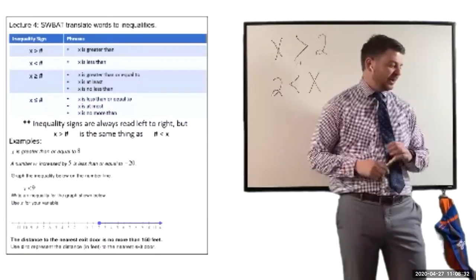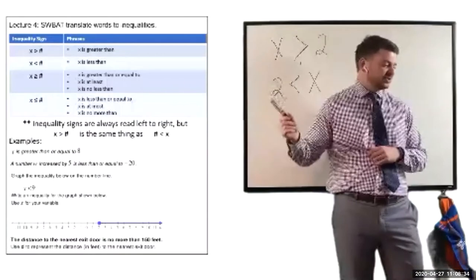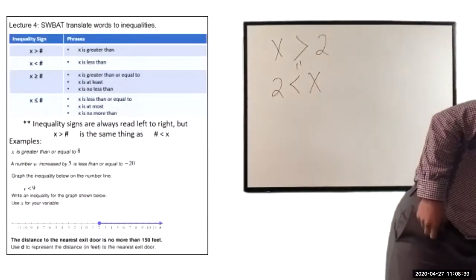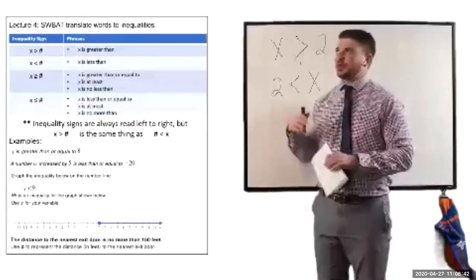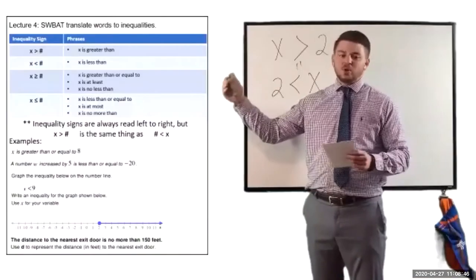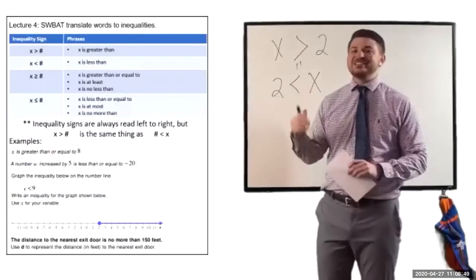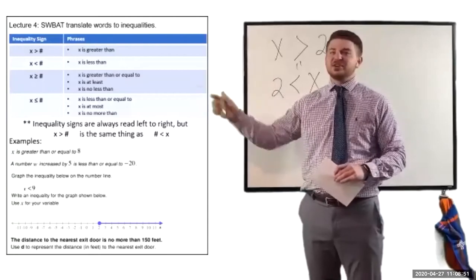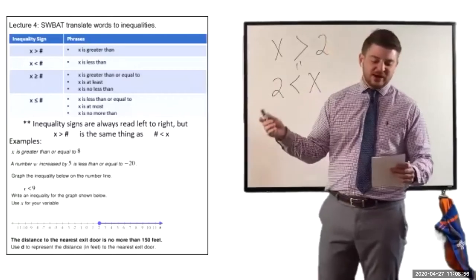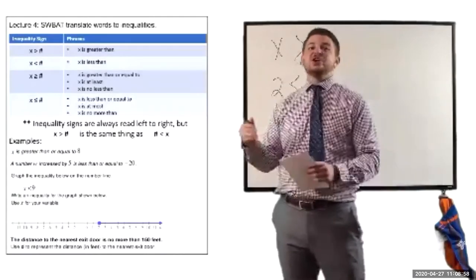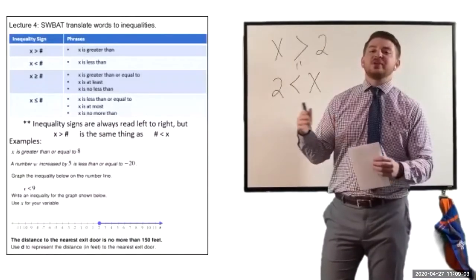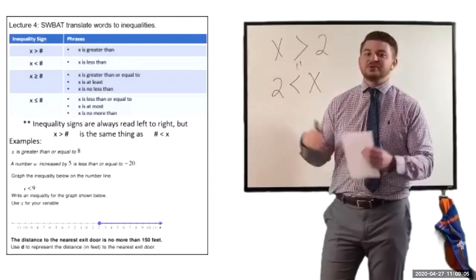I do want to point out the greater than or equal to and the less than or equal to. When you're looking at a greater than or equal to sign, words you might see instead of 'greater than or equal to' include X is at least — so 'at least' is the same thing as greater than or equal to. Another way you could say that is 'no less than.' So, if a number is no less than, that's the same thing as it being greater than or equal to some number.